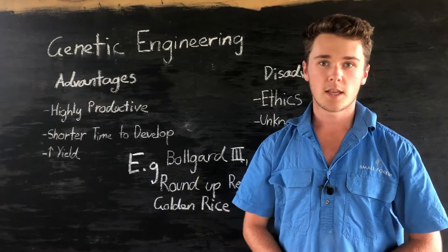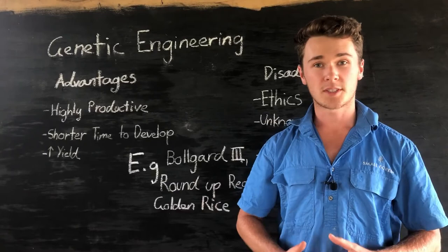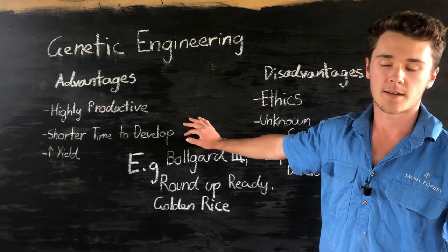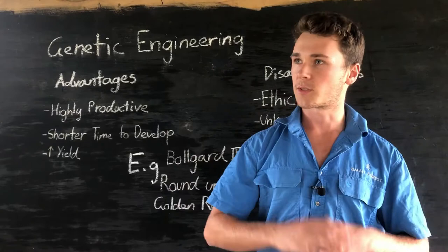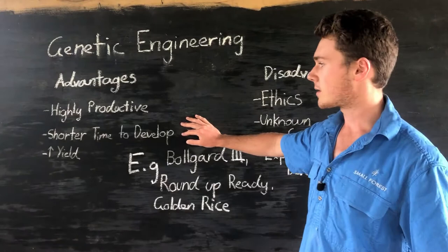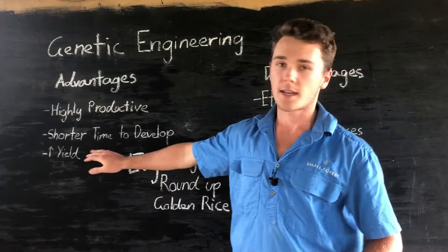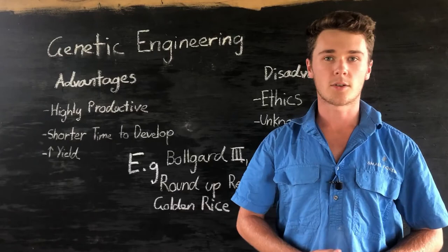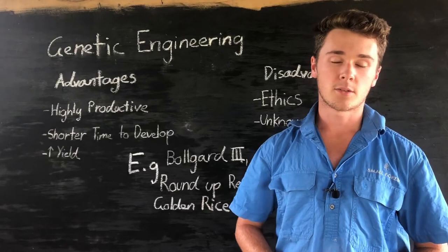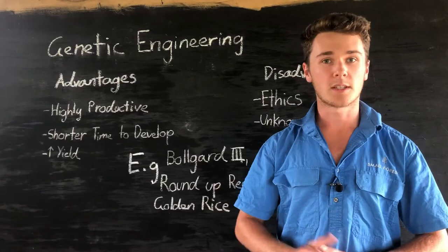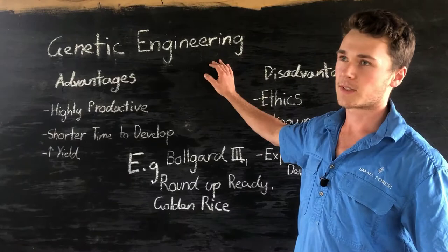An advantage over some other plant breeding strategies is that genetic engineering takes a much shorter time to develop new varieties. Even though we may be looking at a couple of years, it's much faster than breeding plants over generations and generations. We're also going to increase yield, and it may have significant impacts on business financials. With BT cotton, we're no longer spending as much money on insecticides — that's going to significantly increase our profit margins. But there are some significant risks and disadvantages when it comes to genetic engineering.